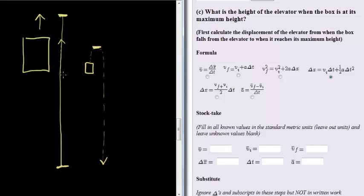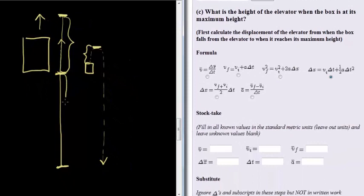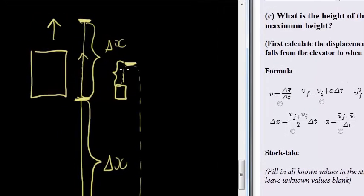We want to know how high the elevator was above the ground when the box reached its maximum height. What we need to calculate is the displacement of the elevator during the first few seconds that the box was still traveling upwards and reached its maximum height. Once we have that displacement, we can add it to the height calculated in the previous question to get the total height.